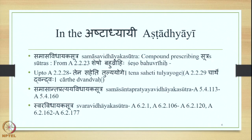In the Ashtadhyai, the Bahuvrihi Samasa is dealt with at different places. The Samasa Vidhayaka Sutras are stated in 2.2, namely from 2.2.23 onwards up to 2.2.28. 2.2.23 is Shesho Bahuvrihi and 2.2.28 is Tenasaheti Tulya Yogi. 2.2.29 is Charathe Dvandvaha, prescribing the Dvandva Samasa in the sense of Cha. This is the small section of Sutras laying down the conditions for the Bahuvrihi Samasa.